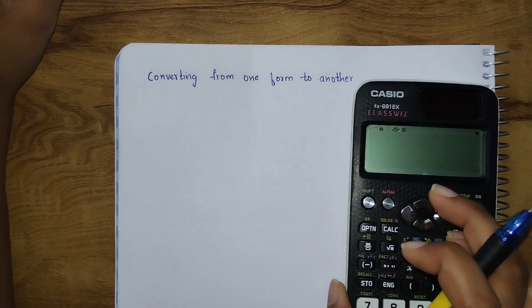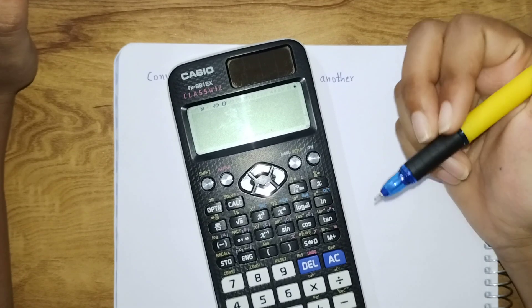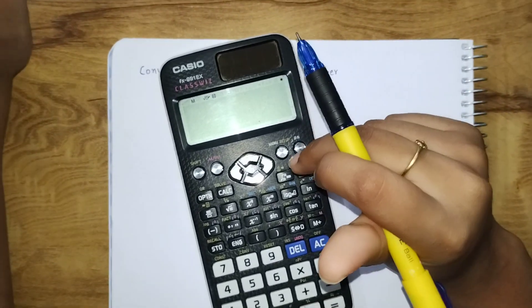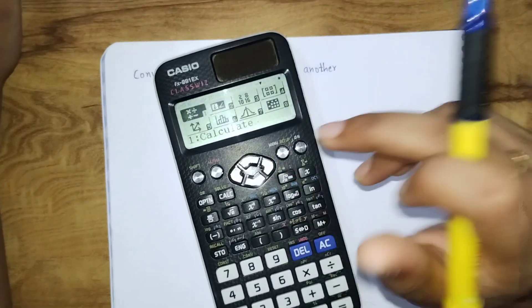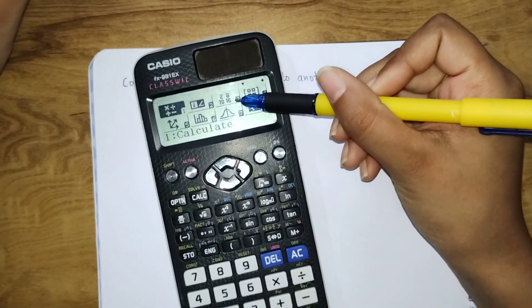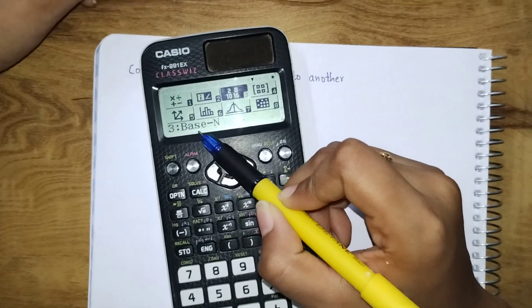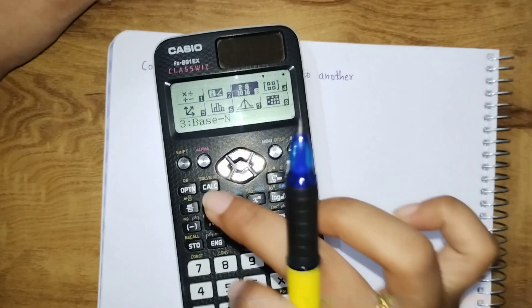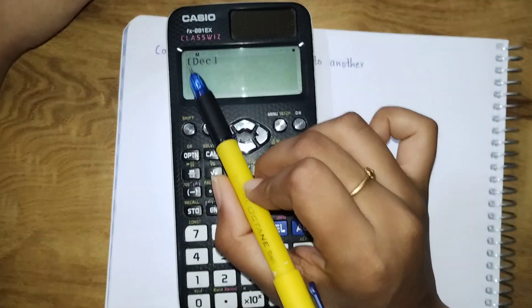It can be done very easily using the scientific calculator. First, we are going to check the settings. Go to menu setup. Here you can see the third option, that is base n. We have to select that, number three, base n. Click on that.